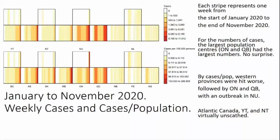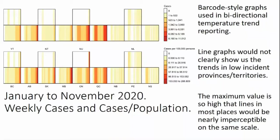I managed to retain adjacency in most cases. Exceptions were the Northwest Territories and Nunavut, which are adjacent to more than one province — I ended up staggering all territories with one space between them. The Atlantic provinces were another exception; I moved Prince Edward Island down because I didn't want to add a third row. I'm calling this a topological map for lack of a better term — it tries to preserve relationships at the expense of distance and shape. This version uses a barcode-style graph inside each box to show COVID cases from January to November 2020.